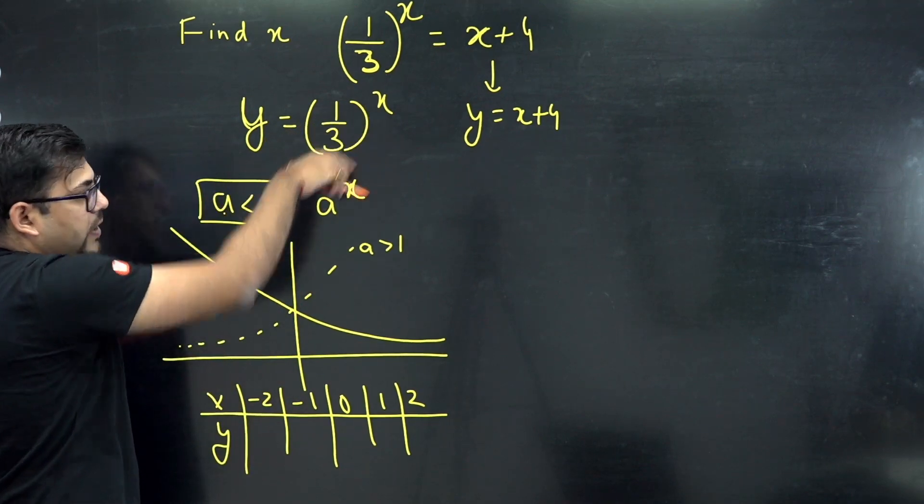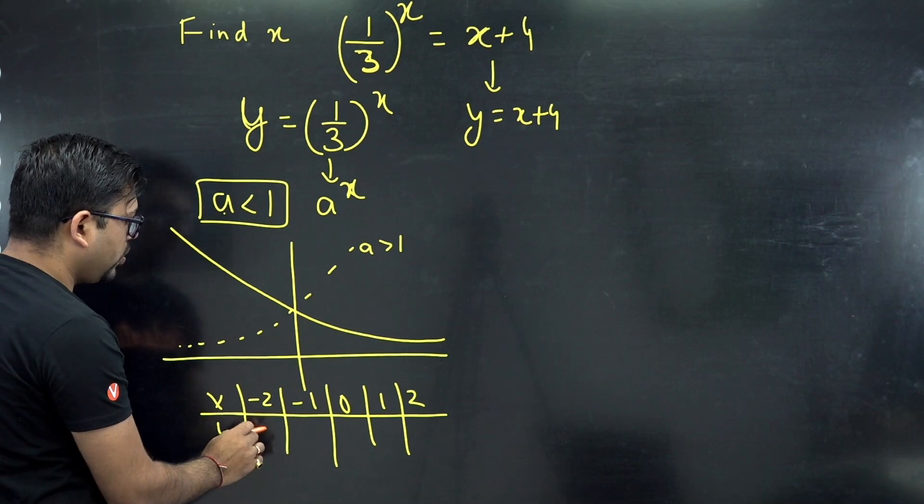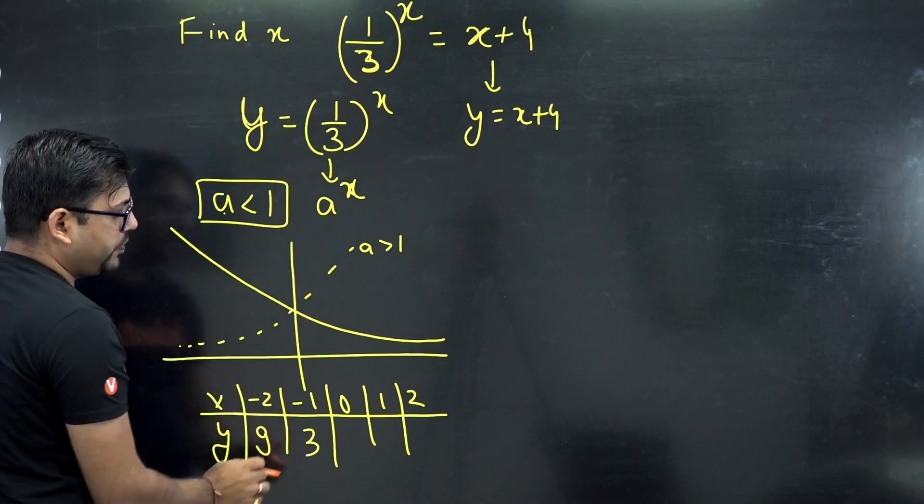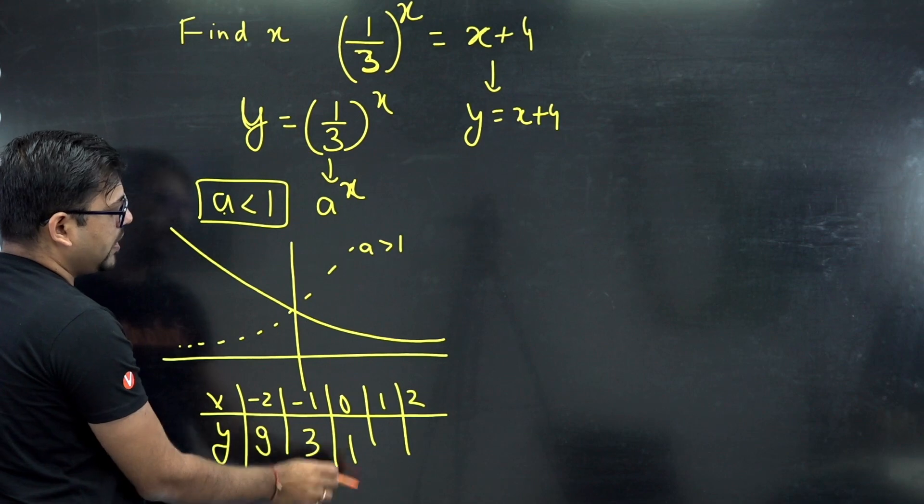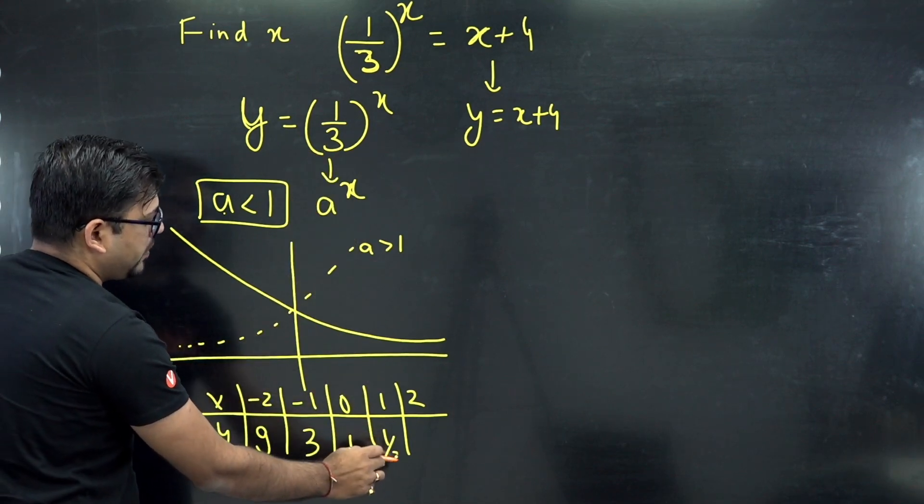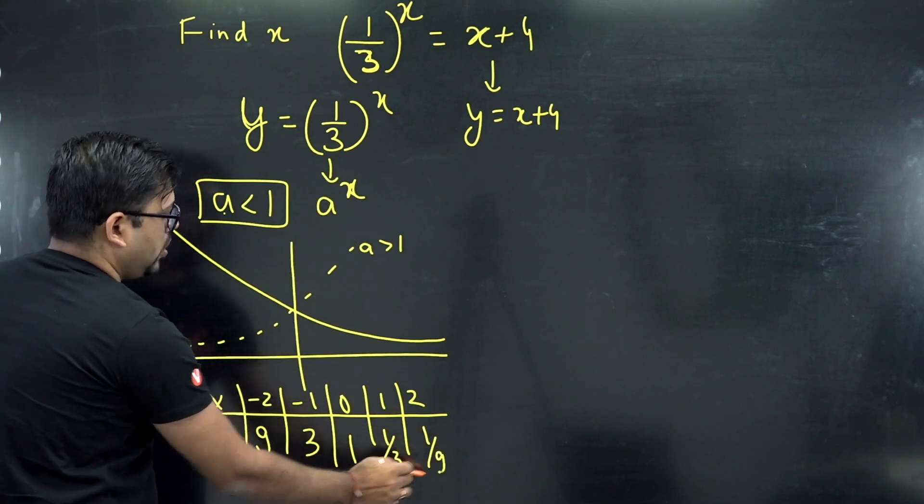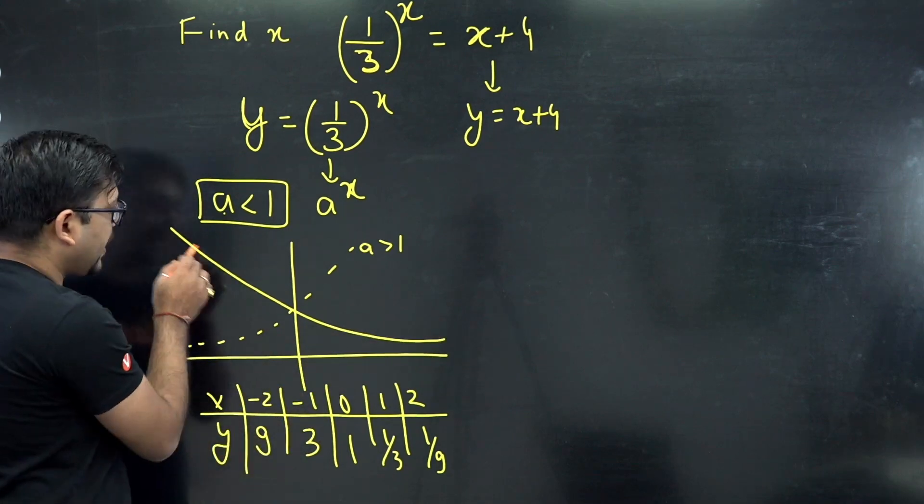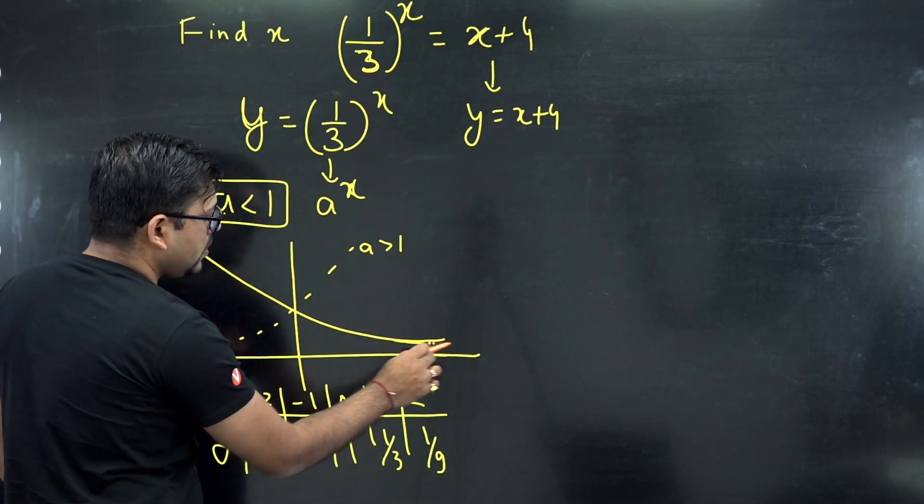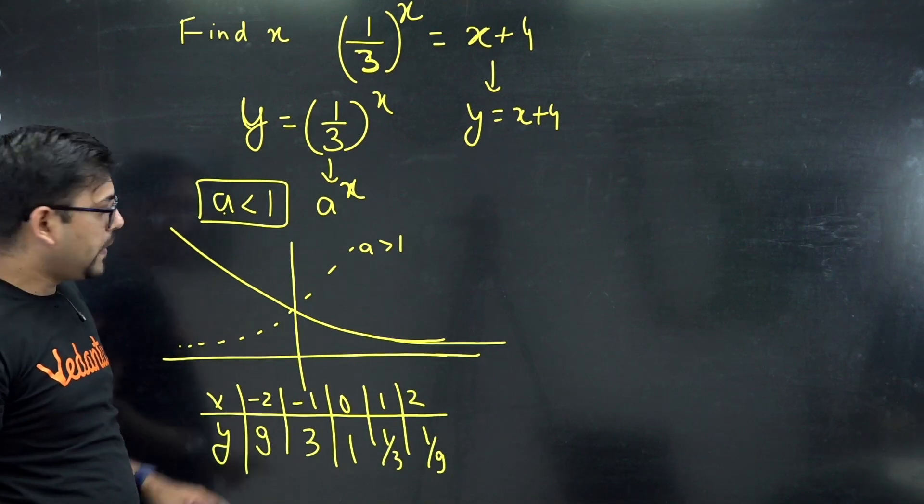Putting here, if you put minus 2, so 1 by 3 raised to power minus 2 will give you a value of 9. If you put minus 1, this will give you a value of 3. If you put 0, it will give you a value 1. If you put 1, it will give you 1 by 3, and then 2 gives 1 by 9. So using this coordinate if you will plot, you will get a graph like this.